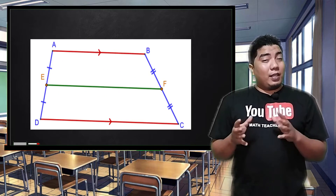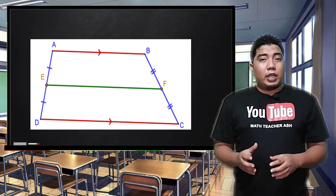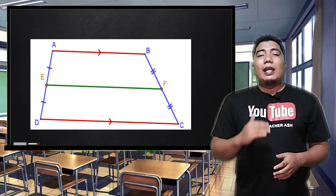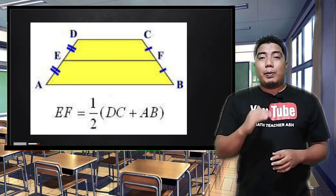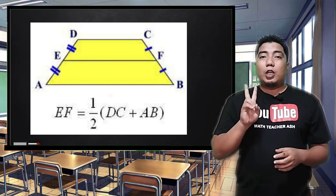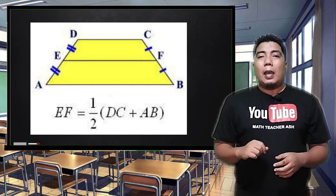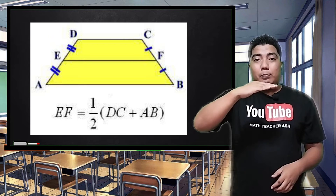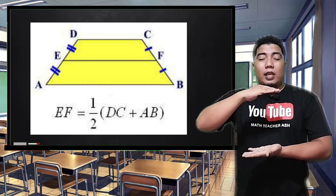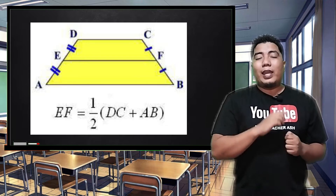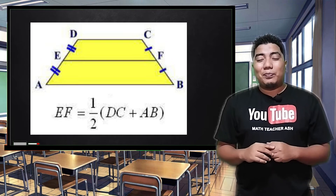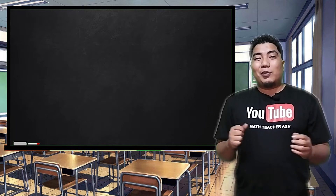The length of that median is equal to one half the measurement of the third side. Now, applying the concept in trapezoids, if you have a median, the length of the median is basically half the sum of the two bases. Meaning, if you add the first base and the second base and divide it by two, you will get the length of your median. Sounds easy, right?